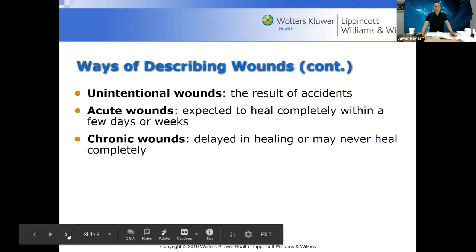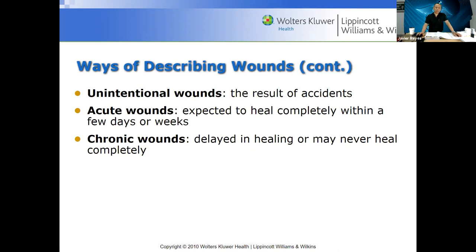Unintentional wounds result from accidents — maybe an accidental cut. Acute wounds require urgent or immediate care; maybe someone got stabbed or shot — they're not only acute but also called traumatic wounds. Acute wounds are expected to heal quickly and completely within probably a few days or weeks. Chronic wounds, like the one shown earlier, take a long time to heal, not only because of the cause but also because of comorbidities — conditions and illnesses that affect the healing process, like diabetes or high blood pressure.